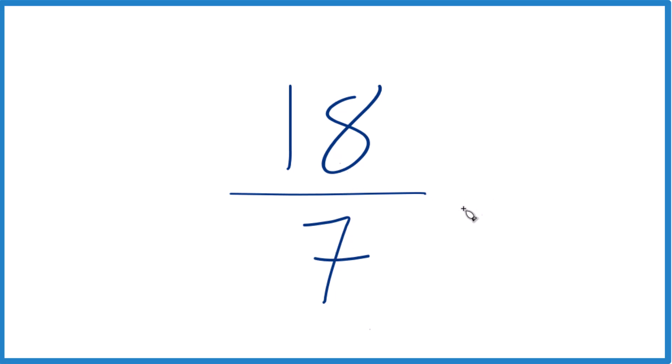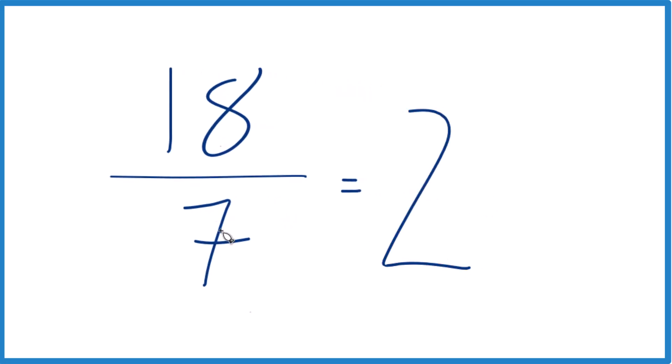7 goes into 18... let's see, 2 times 7 is 14, and then we'd have 4 left over, and we'd just bring the 7 across.